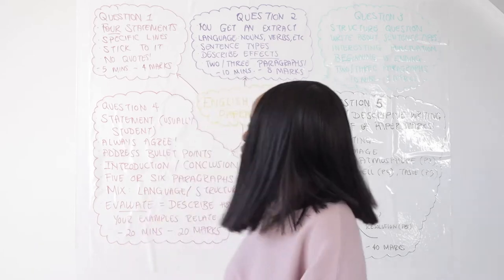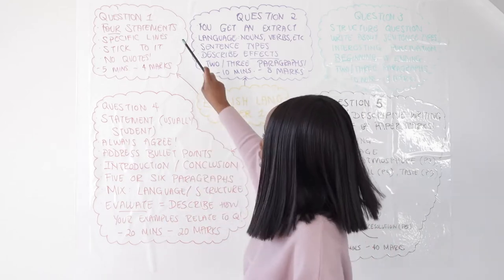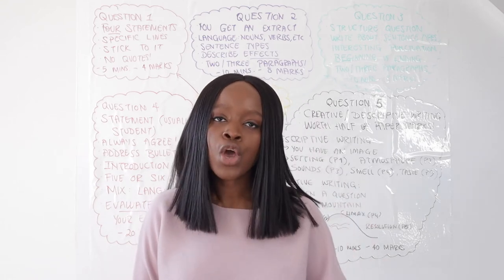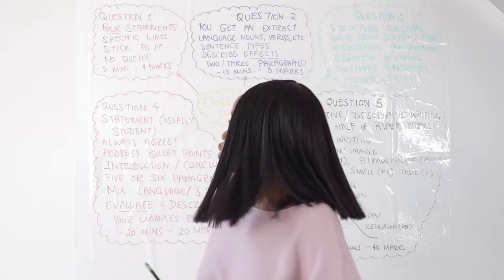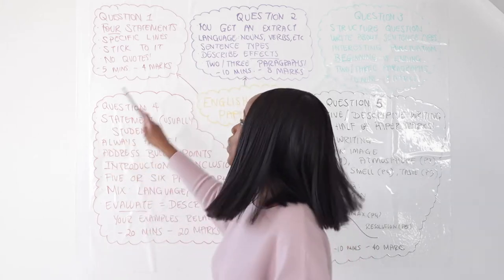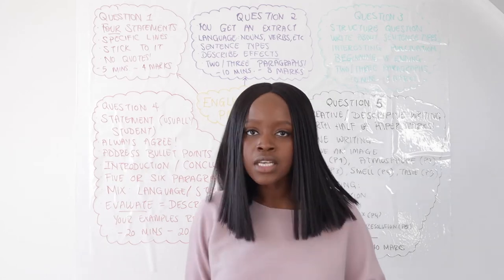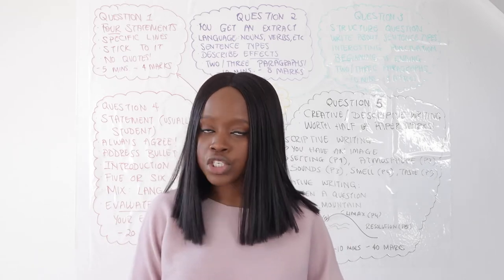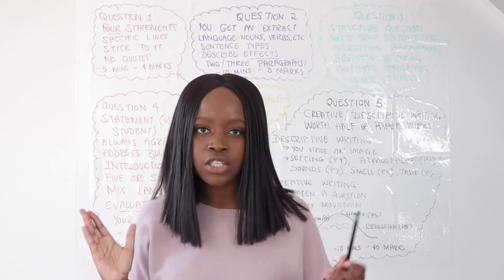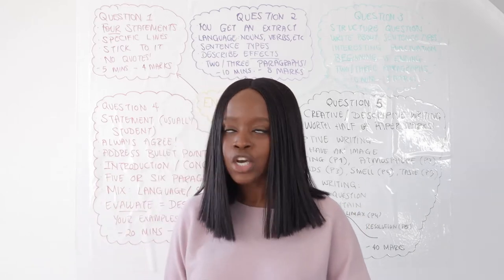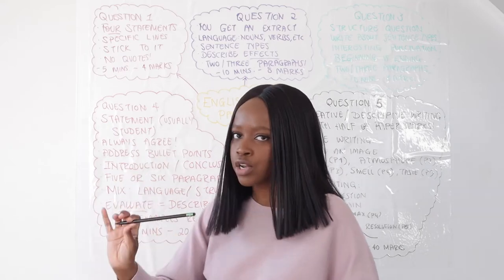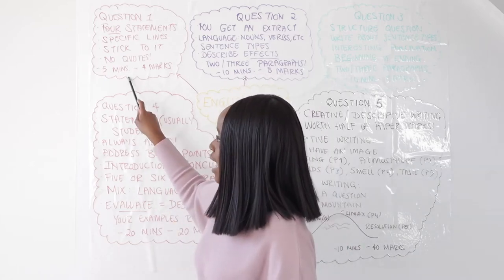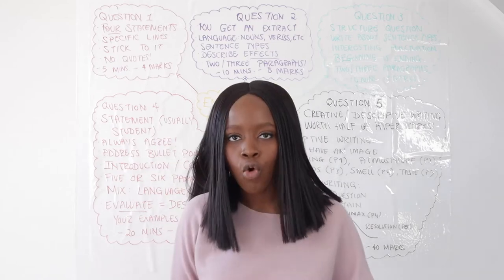Let's get started with question number one. For this paper you usually get four statements and these are really related to specific lines — for instance a question can ask you to look at the extract from lines one to four. You just need to write four simple statements, make sure they're related to those specific lines, and do not add quotations — strictly no quotes. It should be really easy marks as long as you stick to those lines. You should spend a maximum of five minutes and this question is worth four marks.